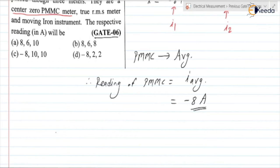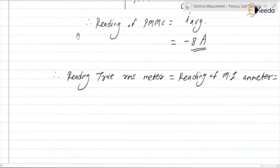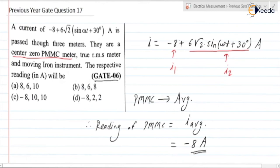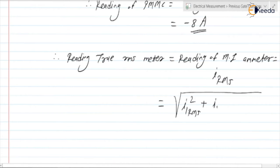The second meter is a true RMS meter. Moving iron also measures the RMS value, and the true RMS meter is the meter which measures the RMS value. Therefore the reading of the true RMS meter equals the reading of the MI instrument, which equals IRMS — the RMS value of current I. Current I has two components: I1, which is DC, and I2, which is sinusoidal. We can write it as under root of (I1_RMS squared plus I2_RMS squared).